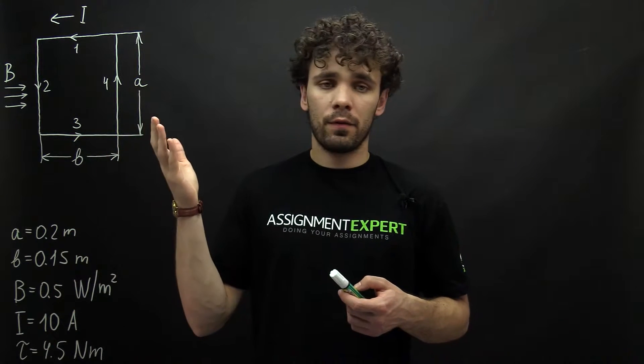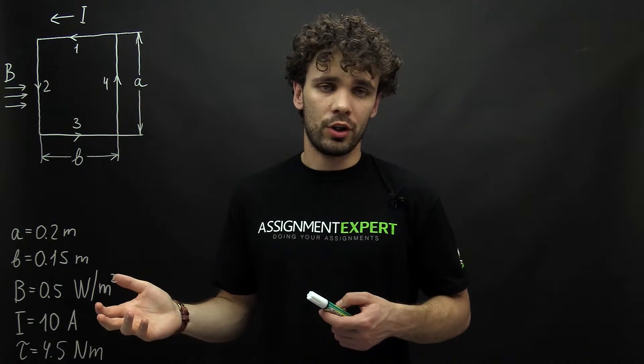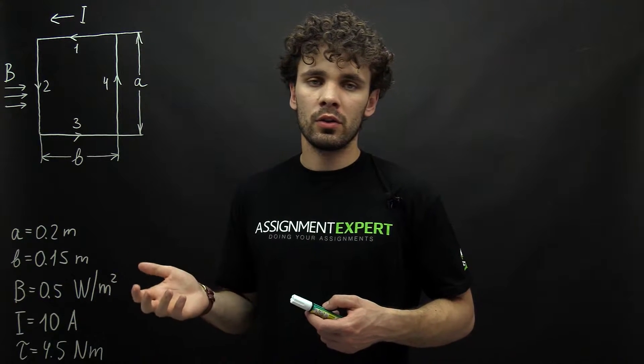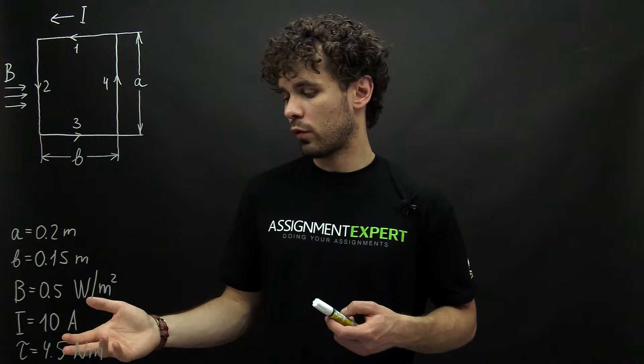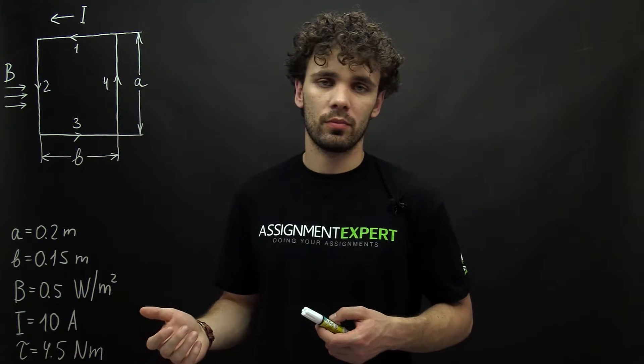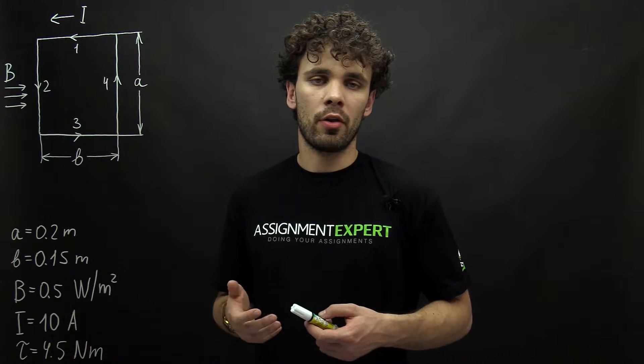The current inside of our coil is 10 amperes and in this field the torque experienced by the coil is 4.5 Newton meters. How many loops are there in the coil?